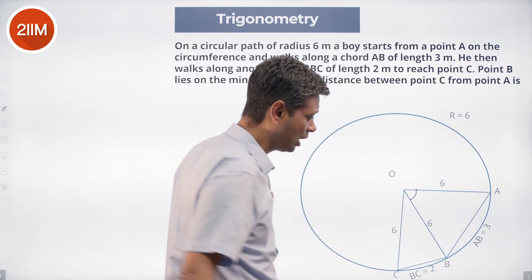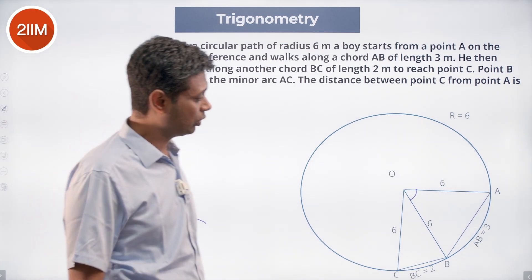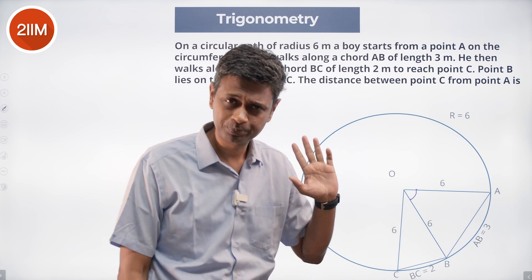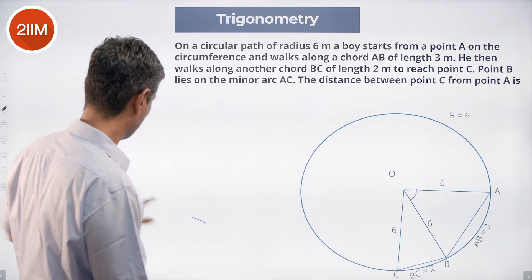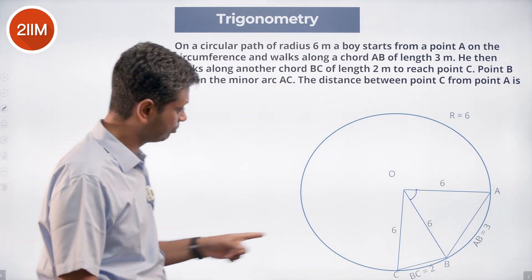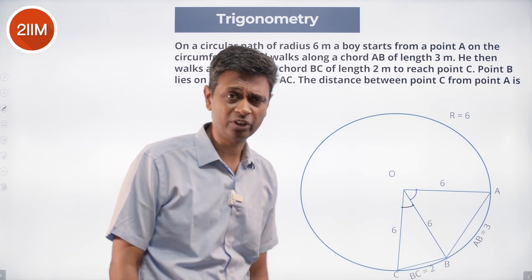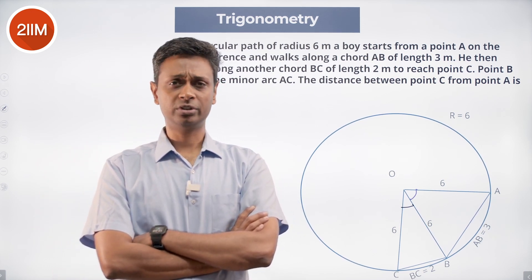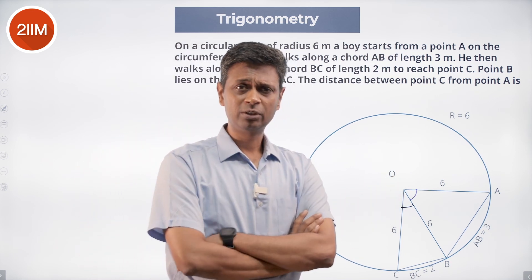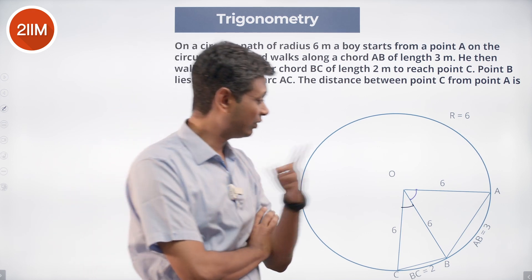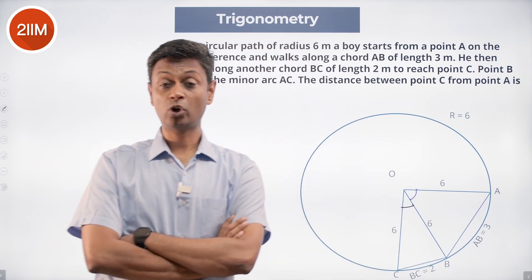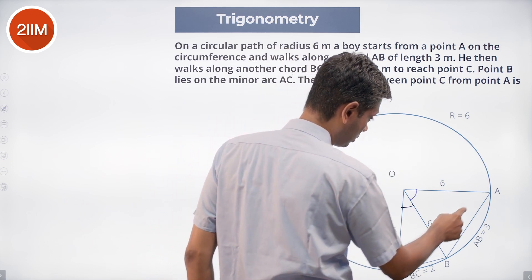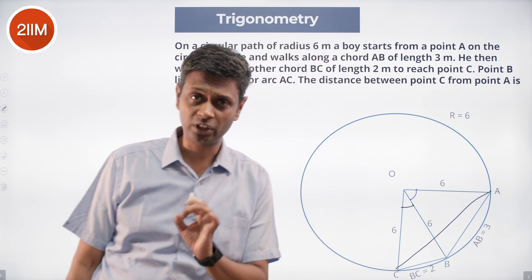So what do we know? We know triangle AOB where we know the three sides — 6, 6, and 3. With that we can find cos of angle AOB. Likewise we can find cos of angle BOC. We know three sides, so a² + b² − c² / 2ab gives cos C. We can find cos of each angle, then sin of each angle, and from that find cos(A+B). Then, knowing OA=OC=6, we can join AC and find AC.